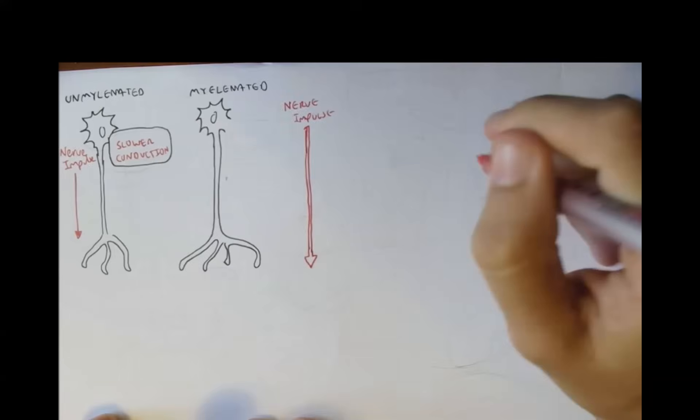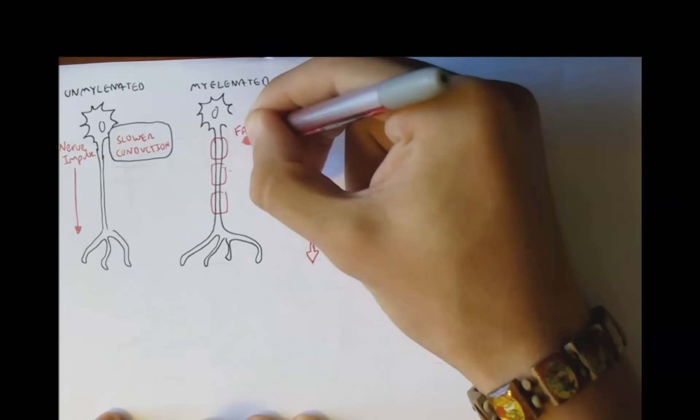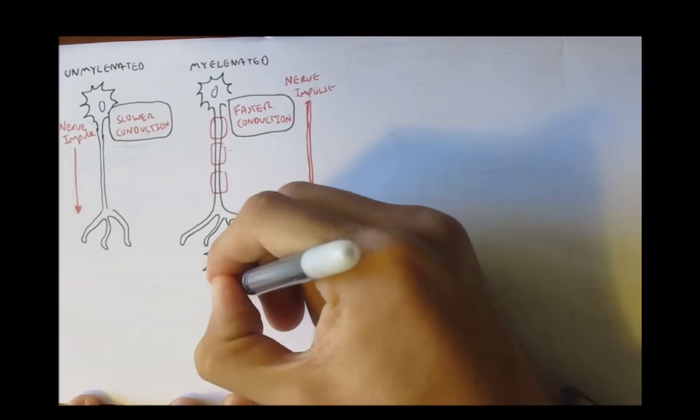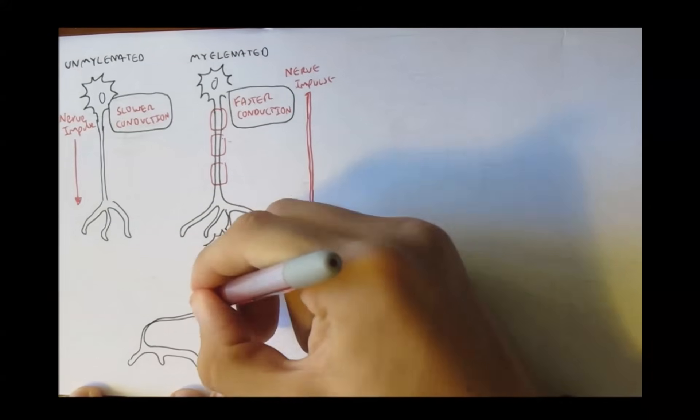Impulses always travel in a forward direction, from the dendrites to the terminal end. When impulses are being sent, it usually passes through many neurons, not only one, and so this signal will be passed through.